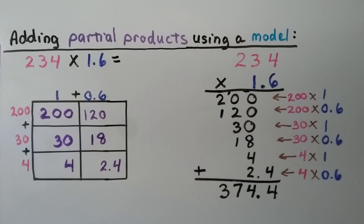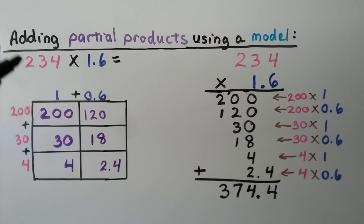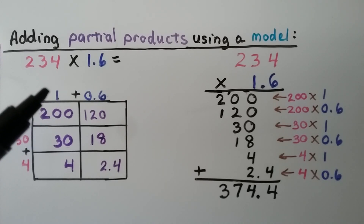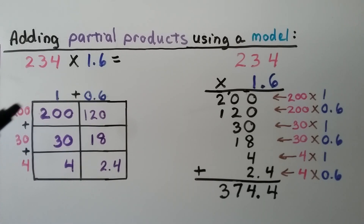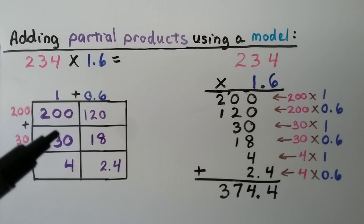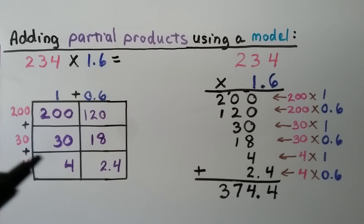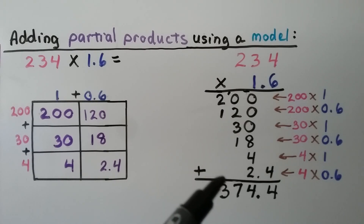For adding partial products using an area model, here we have 234 times 1 and 6 tenths. We break each place value apart: 200 plus 30 plus 4, and horizontally we have 1 plus 6 tenths. 200 times 1 is 200; 200 times 6 tenths is 120; 30 times 1 is 30; 30 times 6 tenths is 18; 4 times 1 is 4; and 4 times 6 tenths is 2 and 4 tenths. We add our partial products and get 374 and 4 tenths.